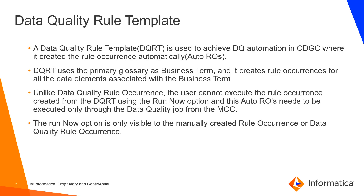Data quality rule template is used to achieve DQ automation in CDGC, where it creates the rule occurrence automatically — also called as auto ROs. Rule template uses the primary glossary as business term and it creates the auto rule occurrences for all the columns associated with the business term.